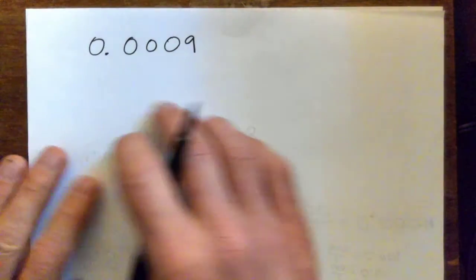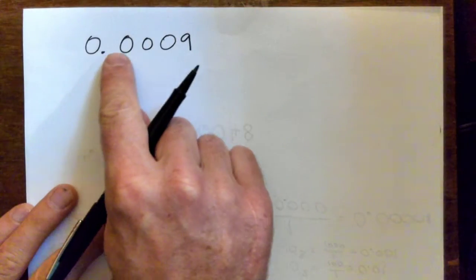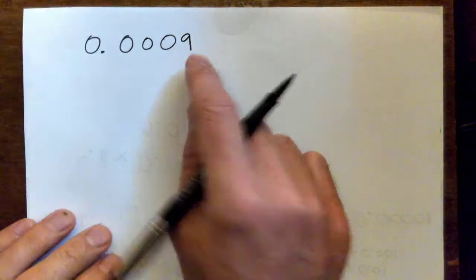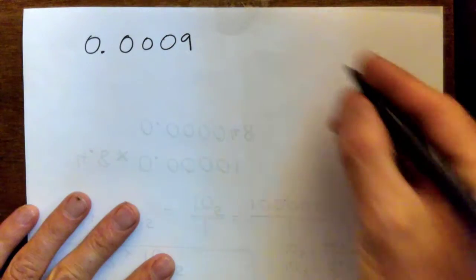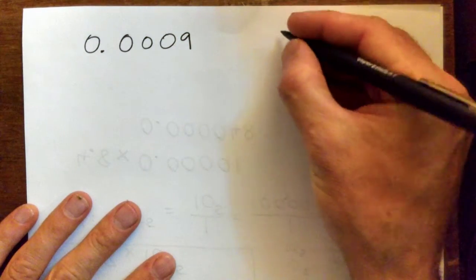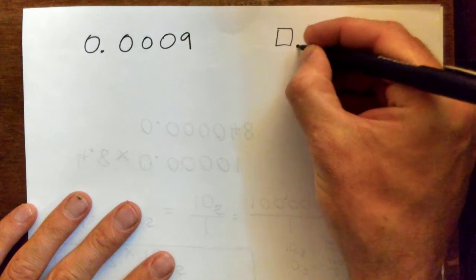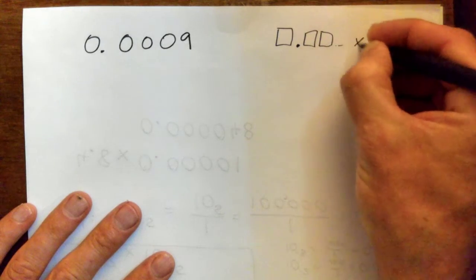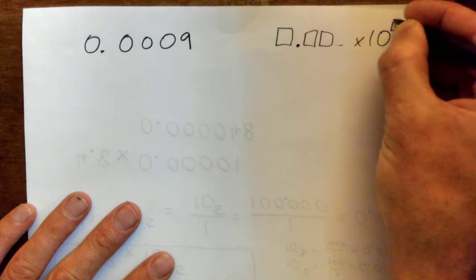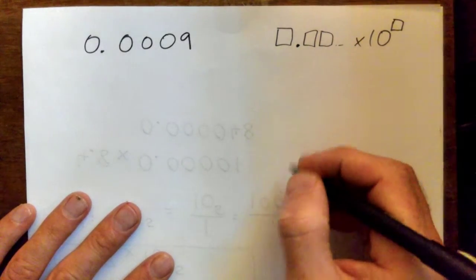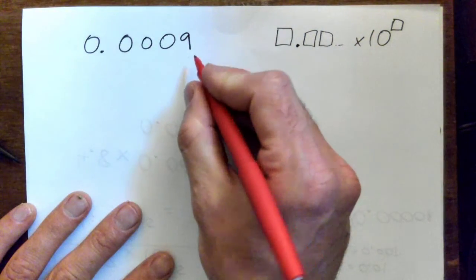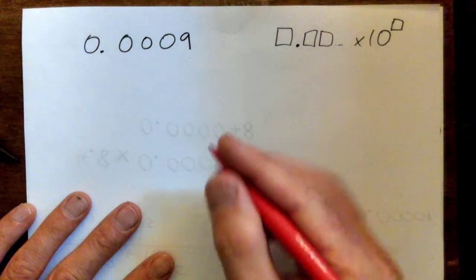We want to convert 0.0009 to scientific notation, which looks like a digit, the decimal point, the rest of the digits, times 10 to the power of some number. We want the decimal point to be to the right of the first non-zero digit.